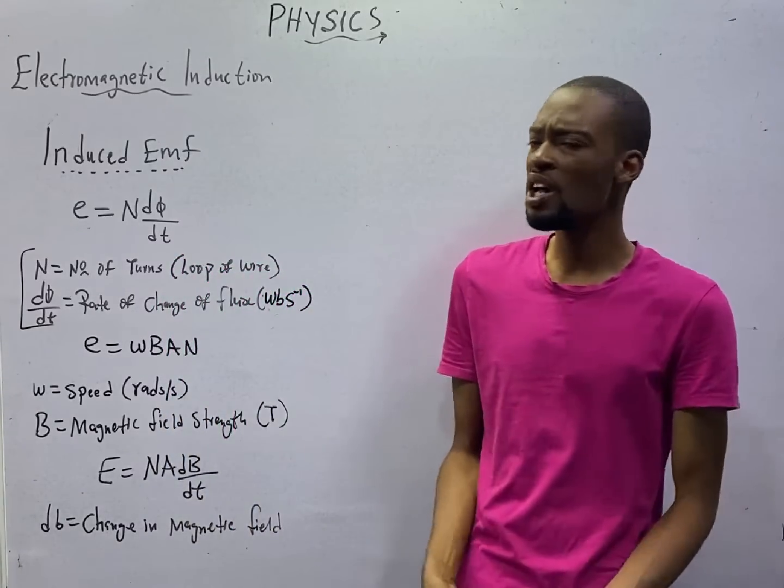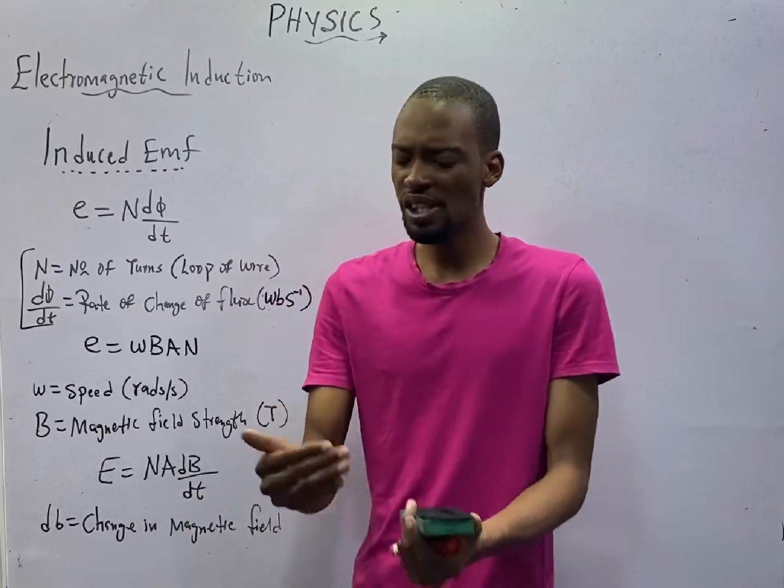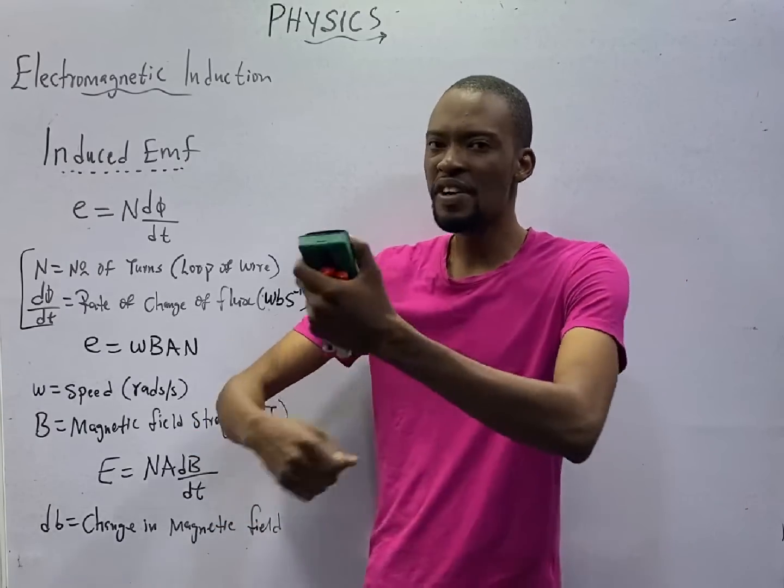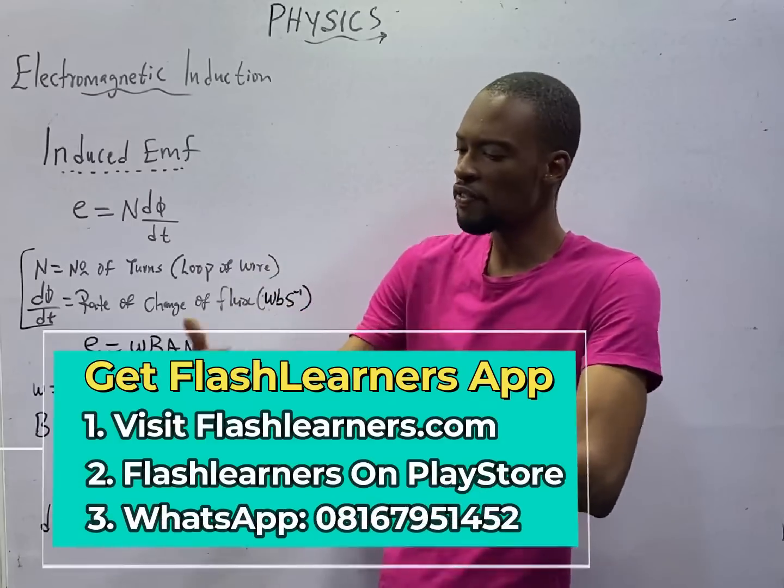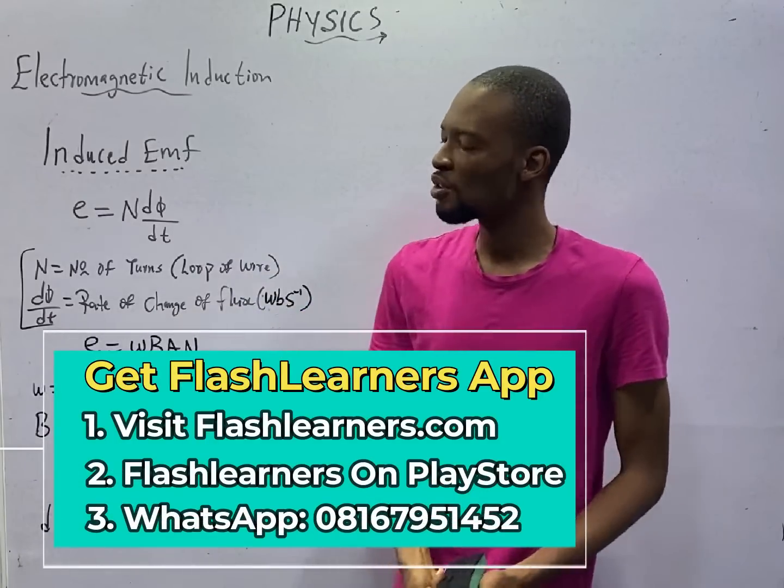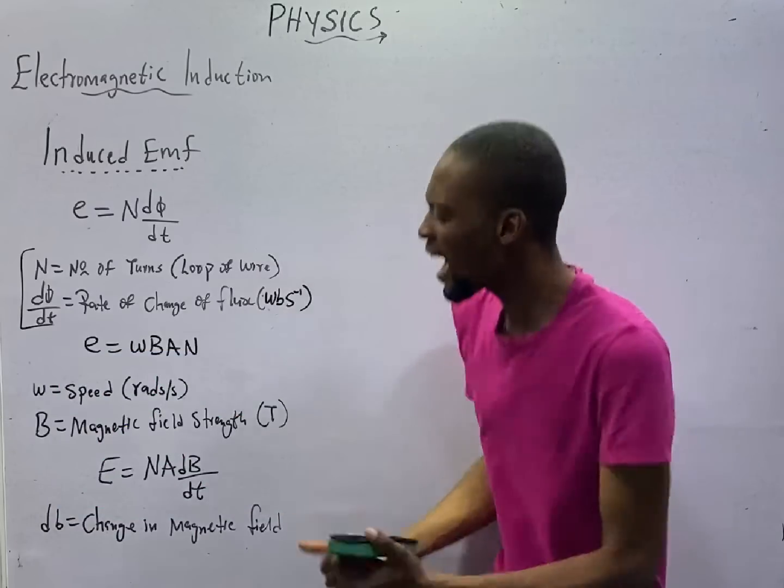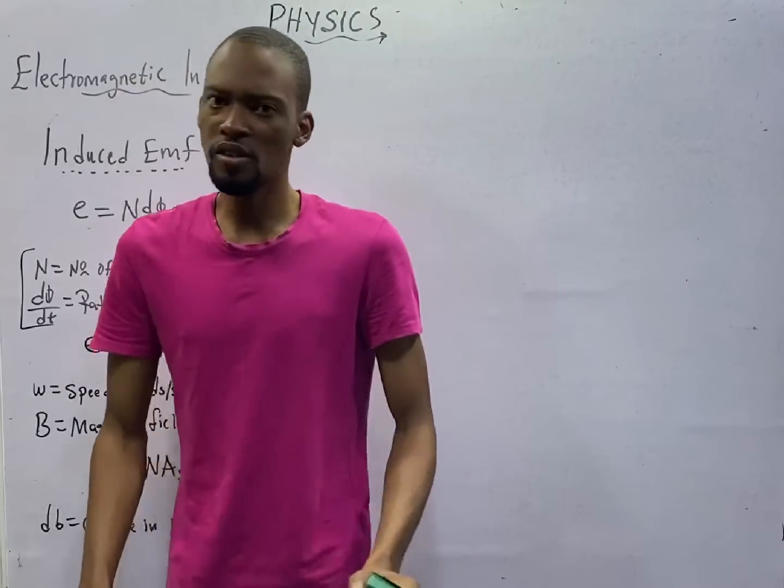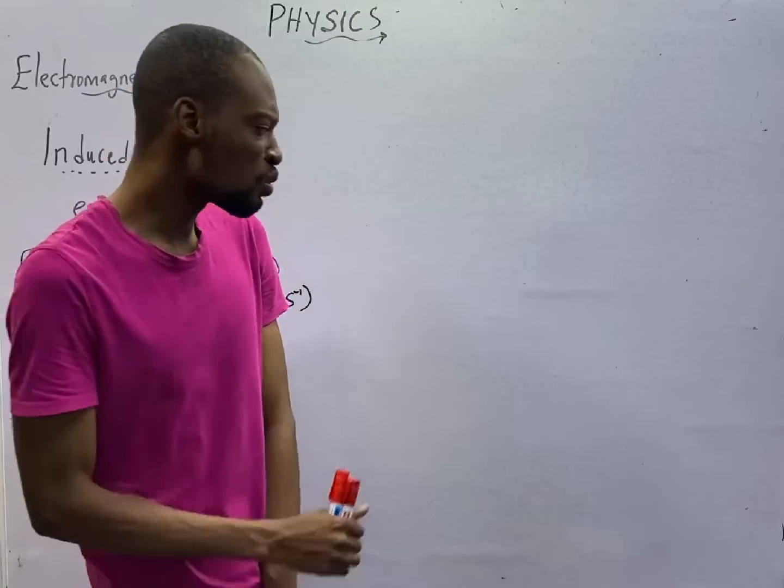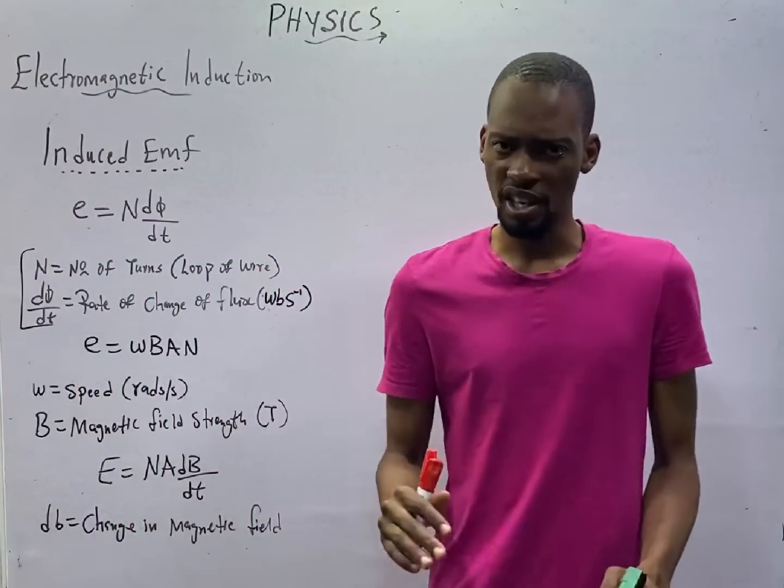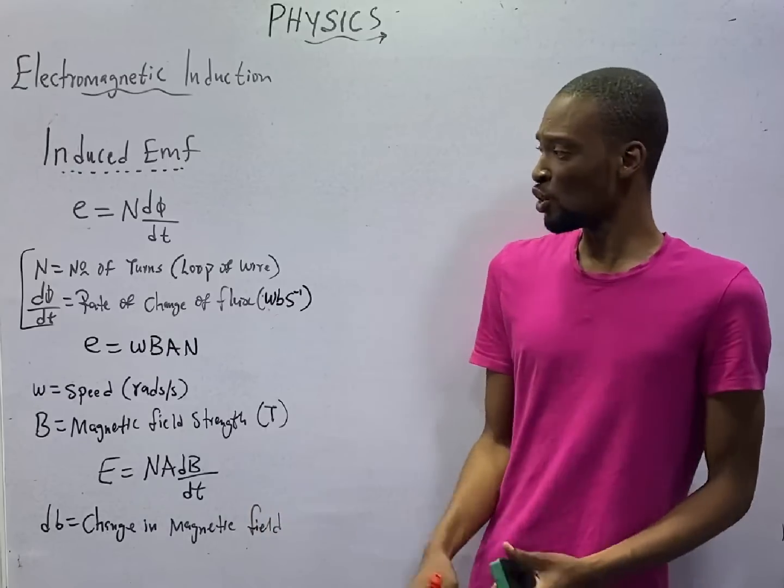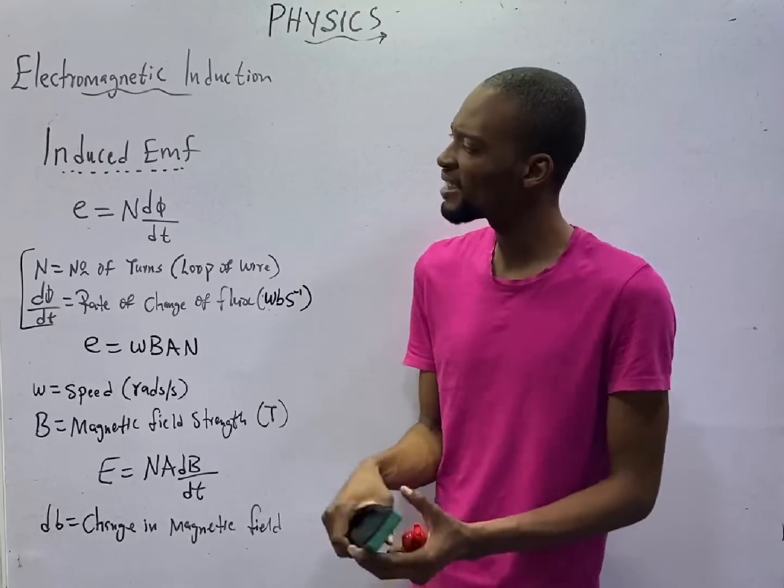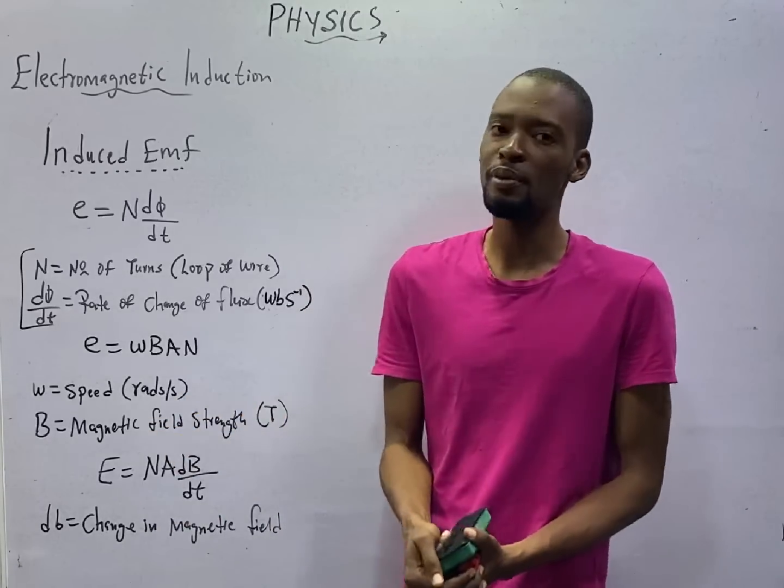Remember, when there is relative motion between conductor and magnetic field, EMF is induced and we need to have a very magnetic field or the flux for EMF to be induced. The magnitude of this induced EMF depends on a lot of factors. In JAMB, you will be asked to calculate induced EMF. Apart from that, you will be given induced EMF and some other parameters and asked to find a particular variable that is missing.